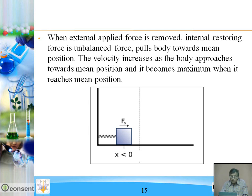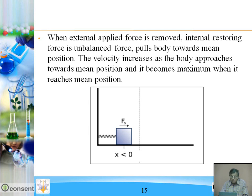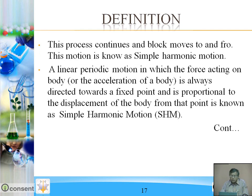When both forces become equal there is equilibrium, and the block again moves towards the mean position, then right, then from right to mean position, from mean position to left, and so on. This oscillates about the mean position. On account of inertia it continues to move to the left and compresses the spring. The restoring force then tries to oppose the compression, directs towards mean position, so the velocity decreases and becomes zero.